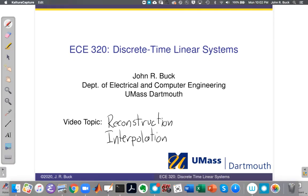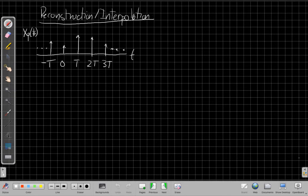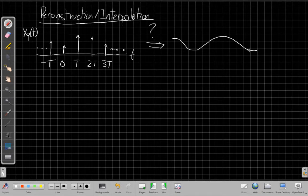The topic of this video is reconstruction or sometimes also called interpolation. In pictorial form, the problem is this: If I have these discrete samples shown here as xp of t, these impulses where the areas have all been scaled based on the height of the original signal, I want to figure out what can I do to get back my original signal. How well can I reconstruct it?